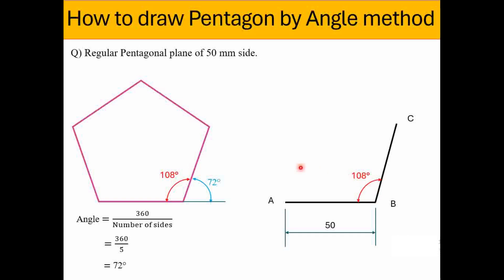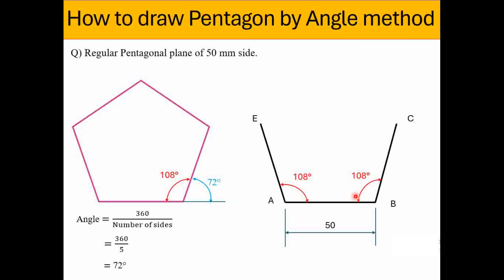Similarly, we have to follow the same procedure at point A also. From point A, with the help of an angle measuring device, we mark the angle of 108 degrees and draw one more line. That line should also have a length of 50 mm, and we name that endpoint as E — the last point. So these are three edges or sides of the pentagonal plane.